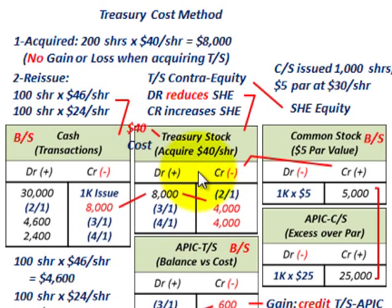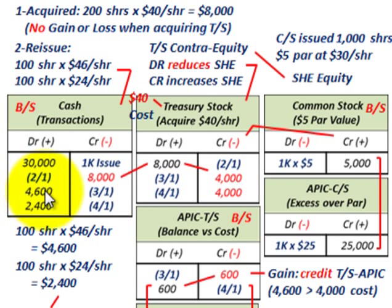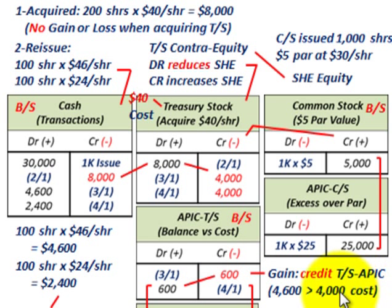We reissued 100 shares at the $40 cost, so we'd credit or reduce our treasury stock by $4,000. The balancing amount goes into additional paid-in capital for treasury stock. We credit that for $600 because we had a credit of $4,000 in our treasury stock account, and we received $4,600 — a debit amount of $4,600. The difference of $600 is a gain, and we credit our additional paid-in capital account for that $600 gain.